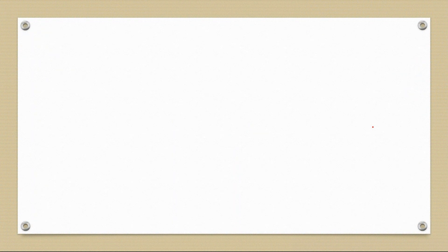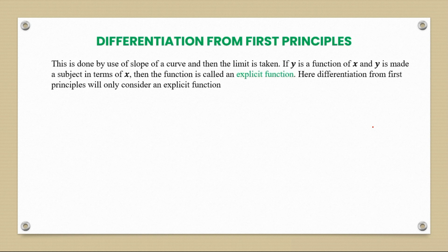Differentiation by first principles is our concept for today. This is done by use of the slope of a curve, and then the limit is taken. If y is a function of x and y is made a subject in terms of x, then the function is called an explicit function. Here we'll only consider an explicit function.